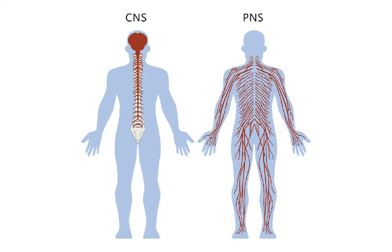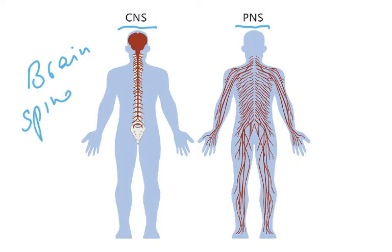First, we need to know what the central nervous system (CNS) is and what the peripheral nervous system (PNS) is. In the central nervous system we have just the brain and the spinal cord — only the brain and spinal cord make up the CNS.